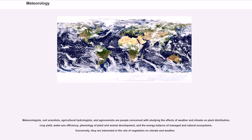Meteorologists, soil scientists, agricultural hydrologists, and agronomists are people concerned with studying the effects of weather and climate on plant distribution, crop yield, water use efficiency, phenology of plant and animal development, and the energy balance of managed and natural ecosystems. Conversely, they are interested in the role of vegetation on climate and weather.